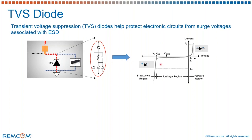Looking into its functionality, the diodes operate in two regions: the forward biased and the reverse biased. Under the forward biased condition, as the voltage across these diodes increases, the current through them also increases.